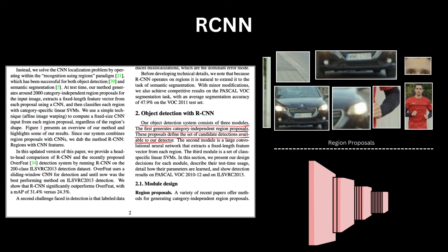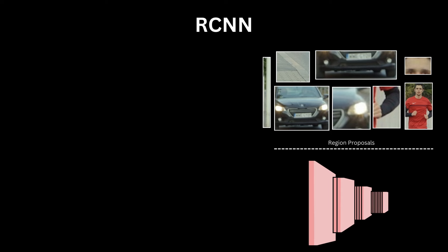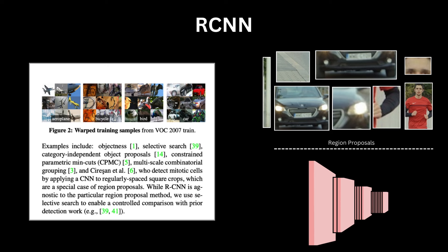RCNN follows this approach. Instead of using all the window crops, it offloads the task of finding regions which possibly contain an object to some other method. This method proposes certain regions in the image which it thinks could possibly contain an object, and then all computations are performed only on these region proposals. The method that RCNN uses for this is selective search.